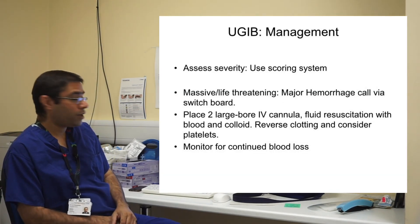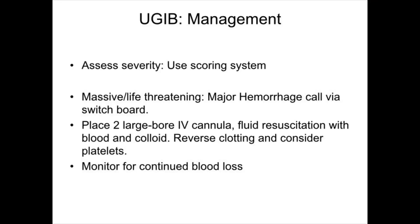Once you have risk stratified the patient and understood the severity using scoring systems, if the patient has a massive life-threatening upper GI bleed, please call the major haemorrhage call. This initiates a rapid response including your medical team, surgical team, anaesthetic team, and alerting the transfusion department. Ensure the patient has two large-bore IV cannulas and fluid resuscitation — initially with blood and colloid if needed. From history, determine whether the patient requires clotting factors, reversal of anticoagulants, or platelet transfusion. Monitor for ongoing blood loss and escalate to your on-call gastroenterology team.